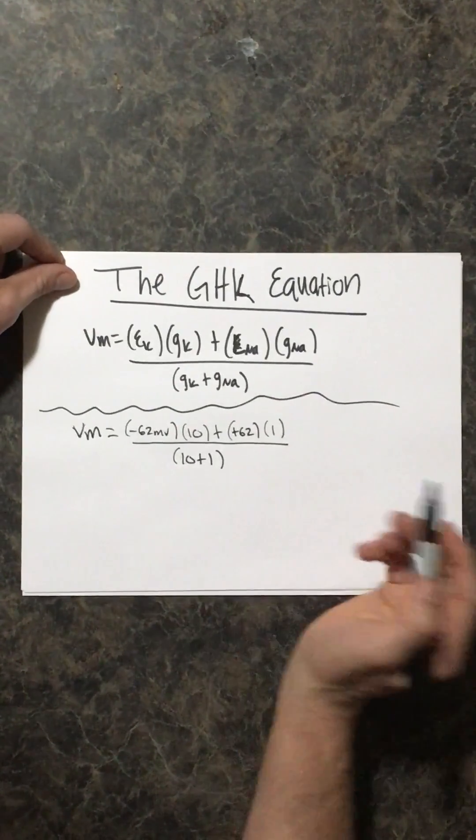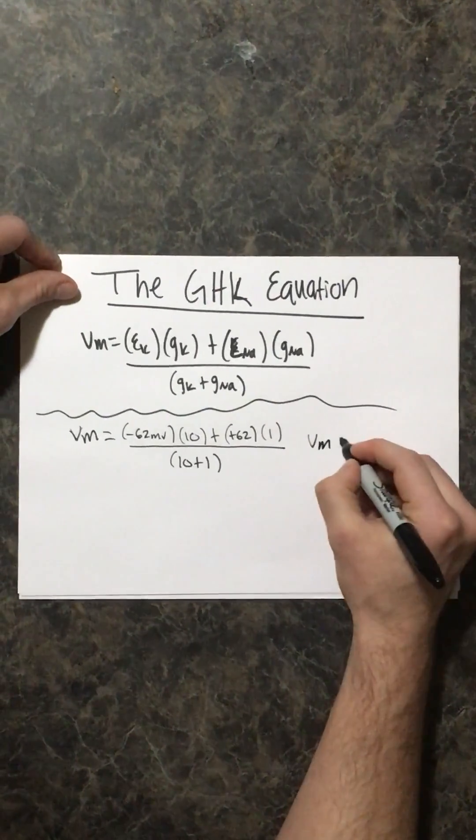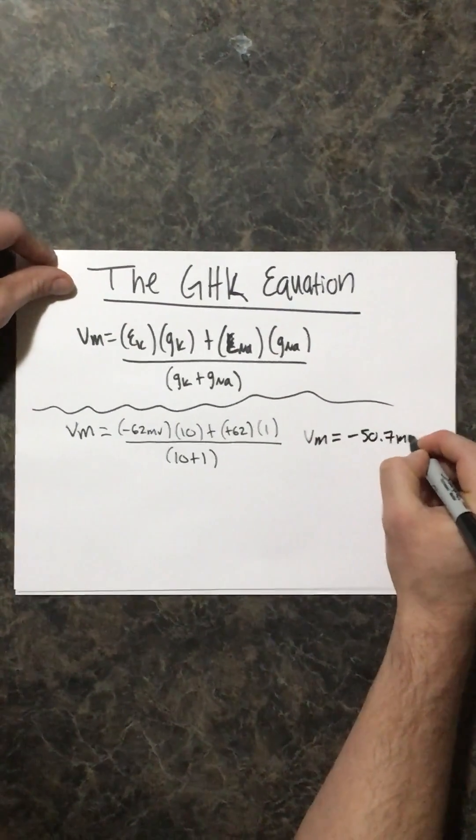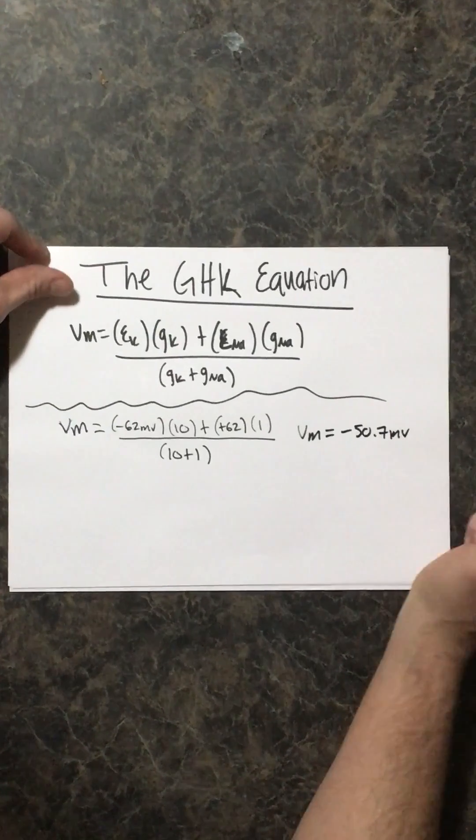So for this equation, if you plug and chug this into your calculator, you should get a V sub M, or resting membrane potential, of negative 50.7 millivolts. Now let me explain again.